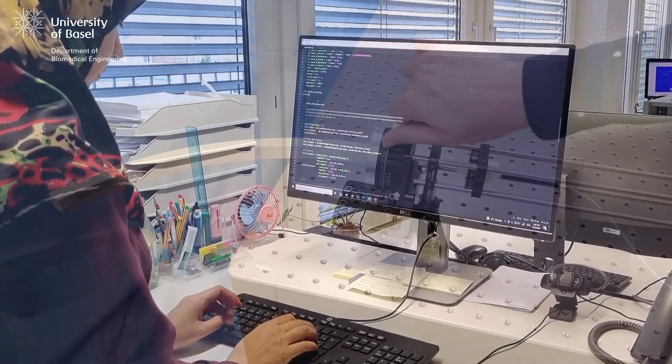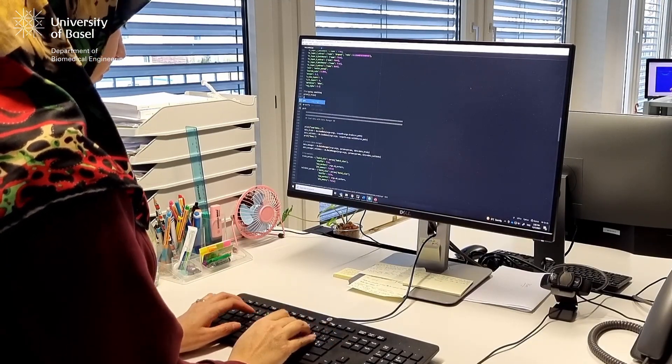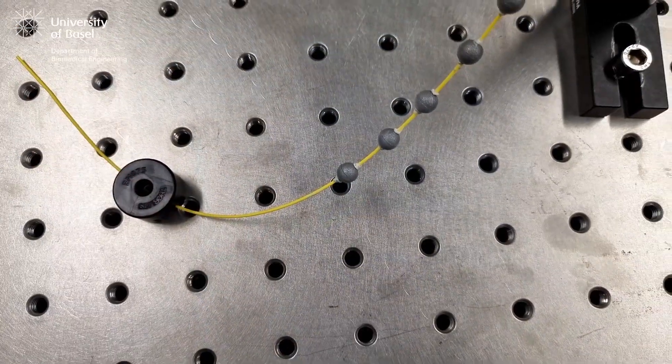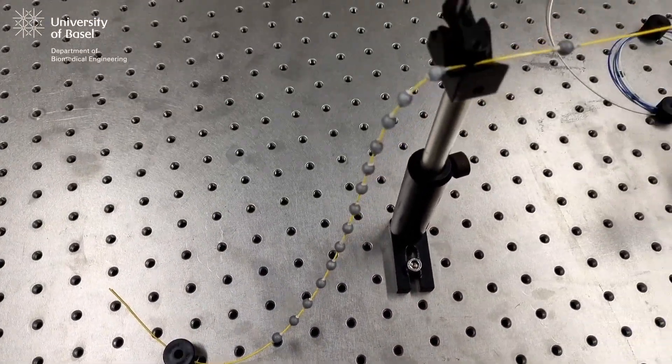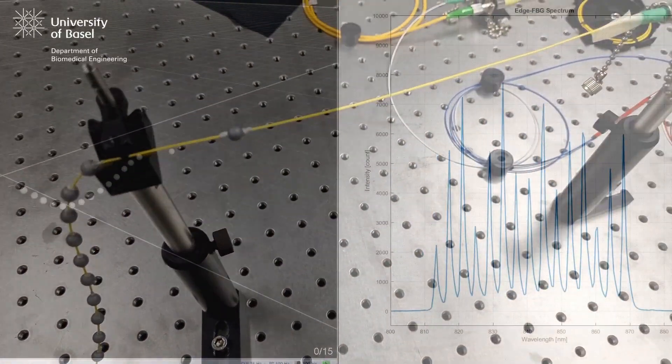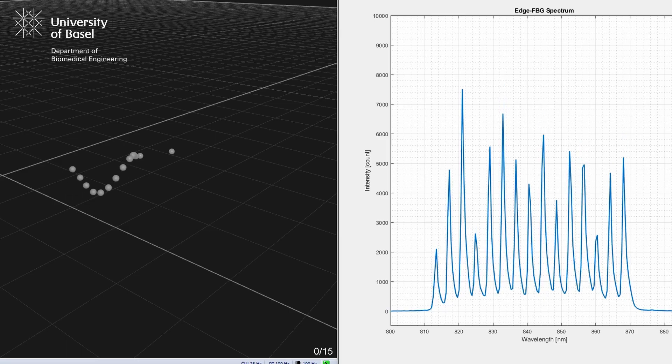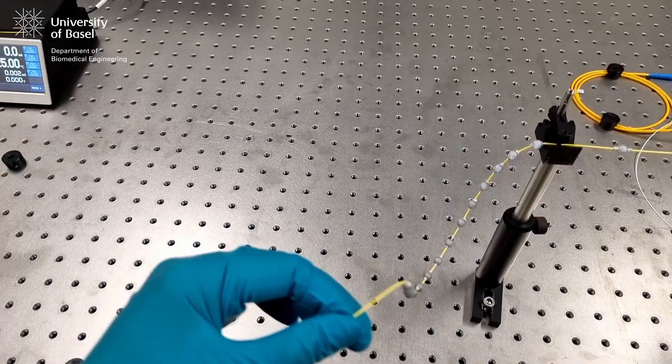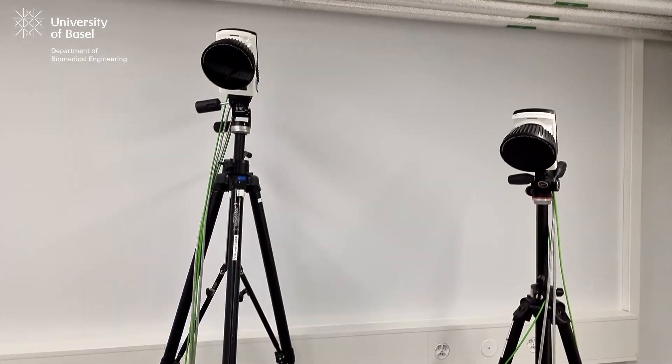We developed a new method for modeling edge FBG sensors to extract the shape information from the full spectrum of the sensor and not only the Bragg wavelengths. In this method, we collected thousands of spectral samples from the sensor at random curvatures and orientations while monitoring its actual shape using a motion capture system.